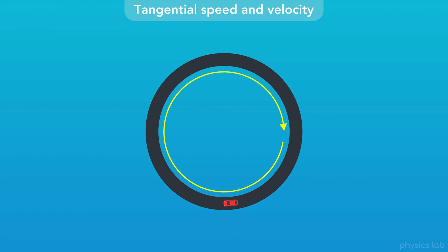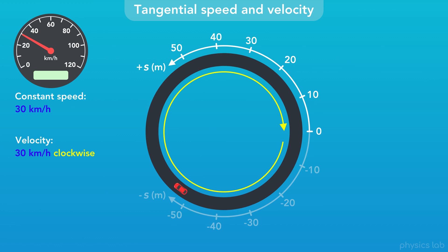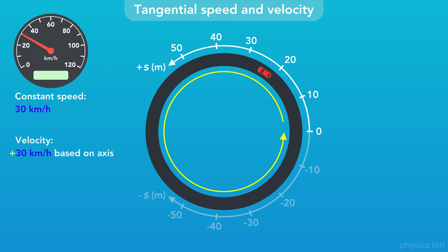If this car is driving in a circle with a constant speed of 30 kilometers per hour, we could say the velocity is 30 kilometers per hour clockwise. But we're usually going to set up a circular axis and establish the positive and negative directions up front. Conventionally, clockwise is the negative direction, so based on this axis the velocity of the car would be negative 30 kilometers per hour. If the car was driving counterclockwise, then the velocity would be positive 30 kilometers per hour.